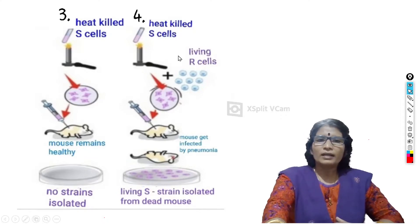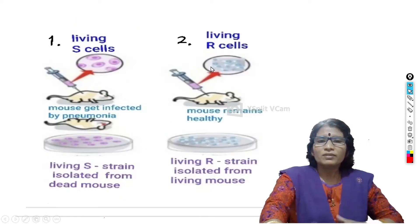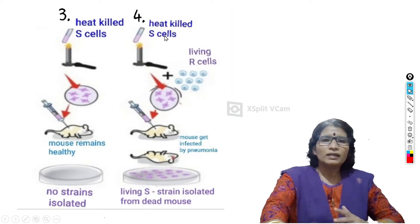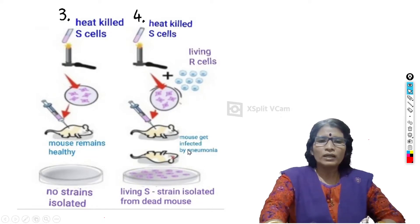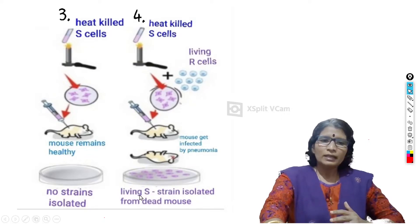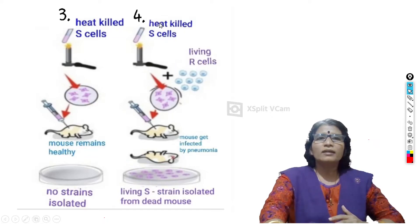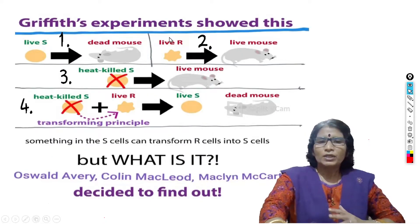In the fourth experiment, the scientist used two types of cells together: heat-killed smooth cells and living rough cells. Recall that heat-killed smooth cells alone did not kill the mouse, and living rough cells alone also did not kill the mouse. But when these two types of cells were injected together into a mouse, the mouse got affected by pneumonia and died. Surprisingly, the scientist finally isolated living S strain bacteria from the dead mouse — even though no living S strain had been injected.